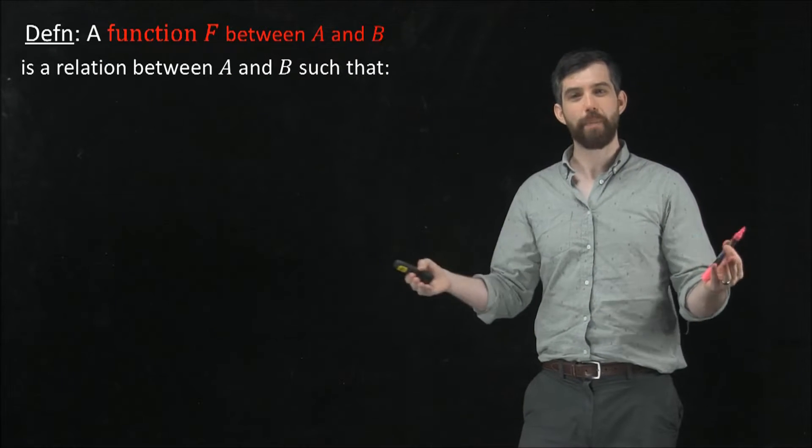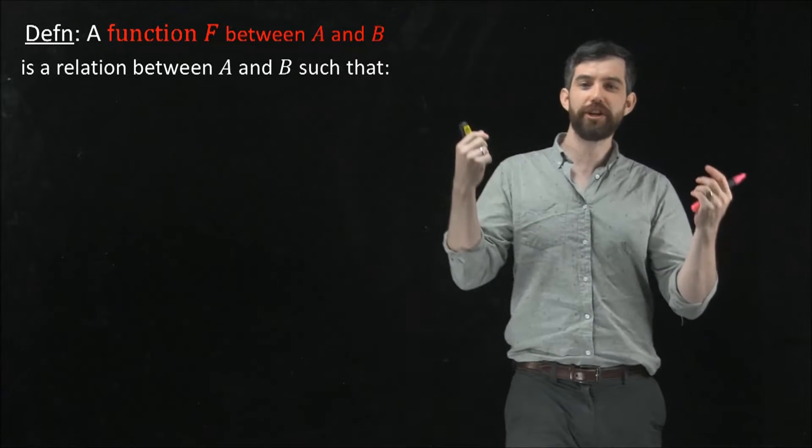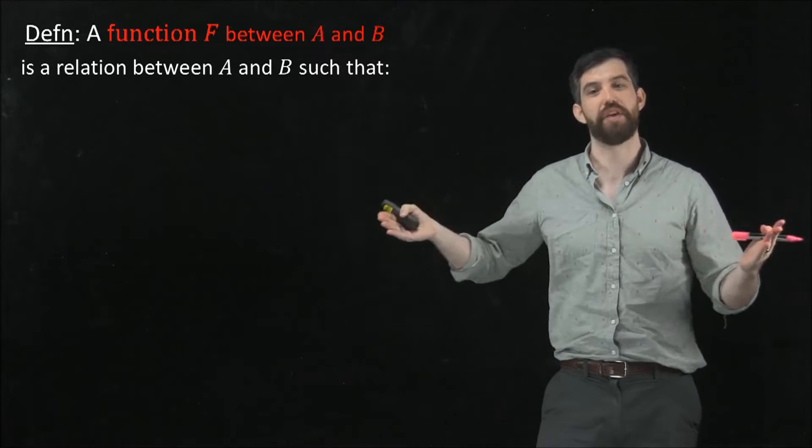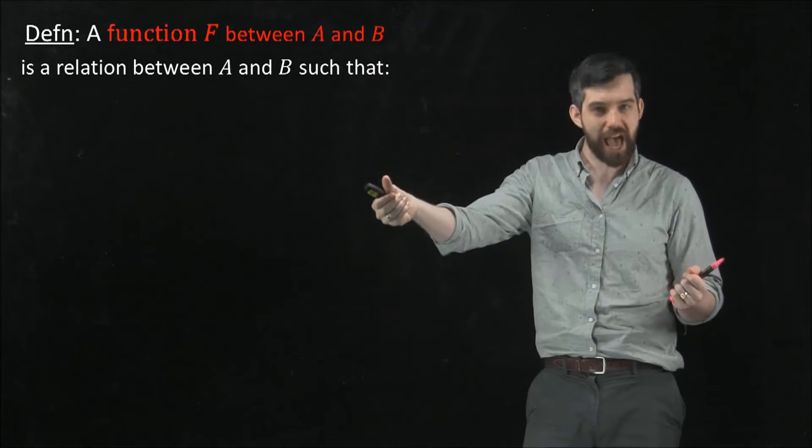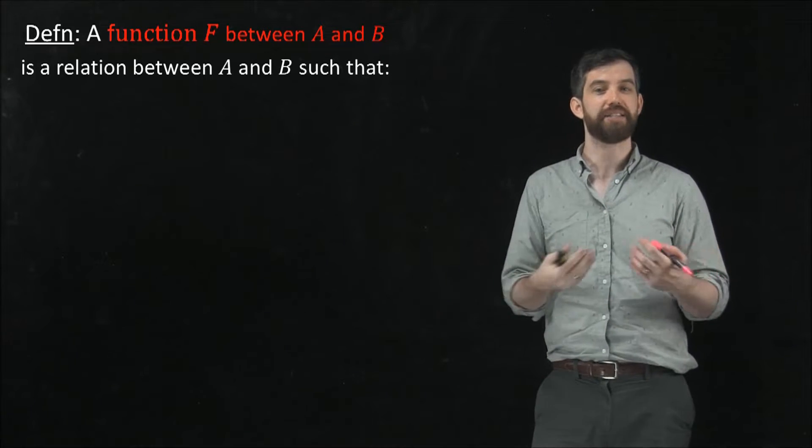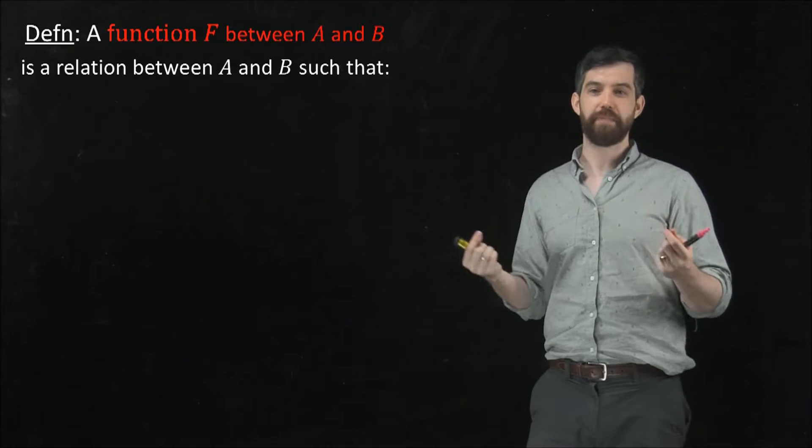So this definition is going to have a couple parts, and it's going to begin as such. A function f between A and B - and note I'm defining that entire thing in red. Its label is f, but a function doesn't just have its label f, it has the connotation of coming between the sets A and B.